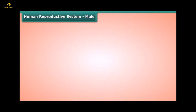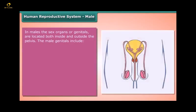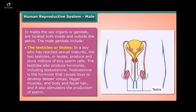Human Reproductive System – Male: In males, the sex organs or genitals are located both inside and outside the pelvis. In a boy who has reached sexual maturity, the two testicles or testes produce and store millions of tiny sperm cells. The testicles also produce hormones, including testosterone.